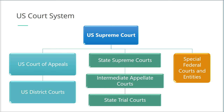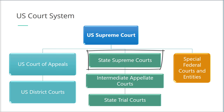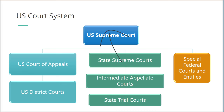Decisions of these courts may be reviewed by a panel of a state court of appeals. Generally, there is also a highest court for appeals — a state Supreme Court — that oversees the court system. In matters that involve issues of federal law, the final decision of the state's highest court, including refusals to hear final appeals, may be appealed to the United States Supreme Court.